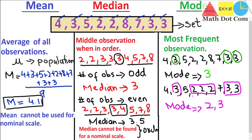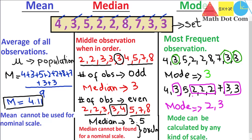Unlike mean and median, mode can be calculated for any kind of scale — there is no restriction regarding the scale. This is how mean, median and mode differ from each other. These are the three most commonly used measures of central tendency, because they provide a single value representing a whole set of data. You can use these descriptive statistics as the basis for inferential statistics. That's all from today's lecture — stay tuned for the next. Thank you.